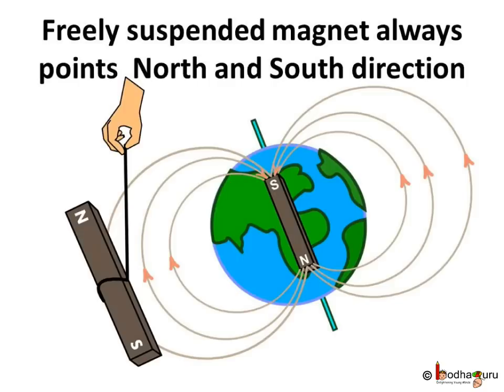So now you must be clear why a freely suspended magnet always points towards the North and South direction. This is because the magnet's North Pole is attracted towards the Earth's magnetic South Pole, and the South Pole is attracted towards the Earth's magnetic North Pole.